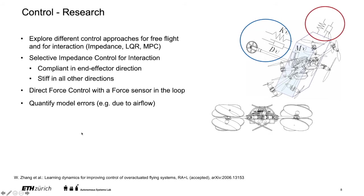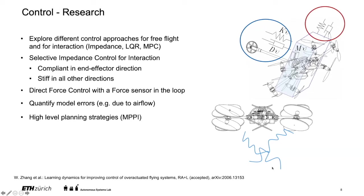Another topic on the low-level controller side is quantifying model errors due to airflow. With this complex aerial manipulator we always have interfering airflows and other model uncertainties. My colleague is working on using Gaussian processes to model these exact influences. We also follow higher-level planning strategies for more complex interactions with dynamic environments, and we recently started working on making control during environmental interaction safer and more robust using a passivity approach.